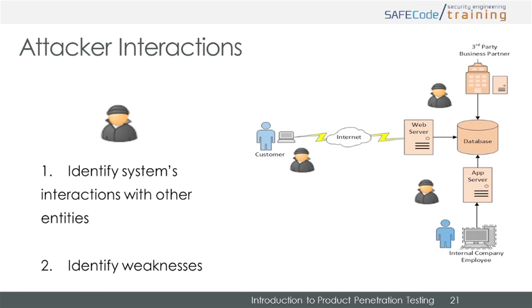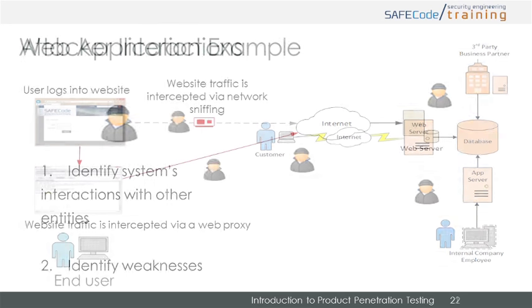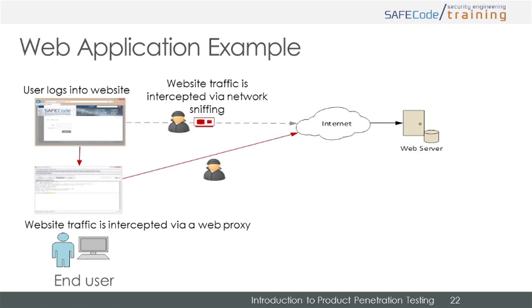Typically, the attacker begins with an exploration of the system's interactions with other entities — such entities can be software (processes), hardware (machines), or users. Each such interaction is then closely investigated for weaknesses. For example, consider a web application login page that accepts user credentials, ID and password, to authenticate users. In this interaction, if the communication channel is not encrypted, anyone with access to the communication channel can steal credentials, which is a weakness.